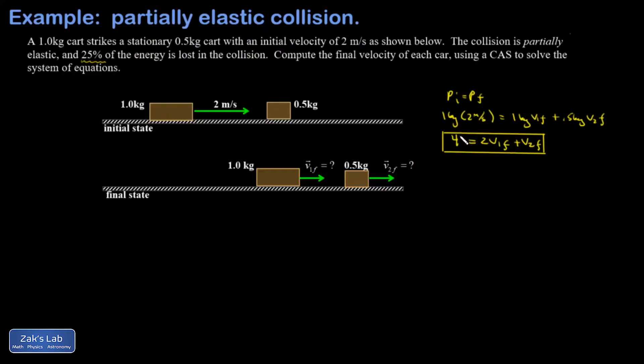Now for the energy analysis. I know that 25% of the energy disappears in this process, so K final, the final kinetic energy, must only be 75% of the original. Throwing in all the details: 1/2 times 1 kilogram times V1 final squared plus 1/2 times 0.5 kilogram times V2 final squared equals 0.75 times the original energy, which is 1/2 times 1 kilogram times 2 meters per second squared.